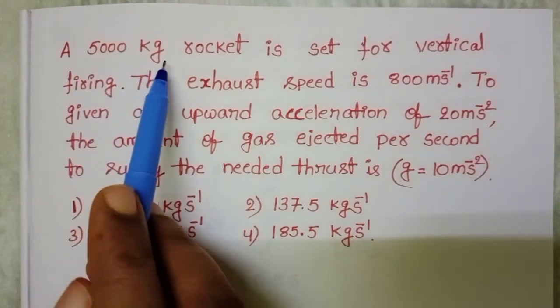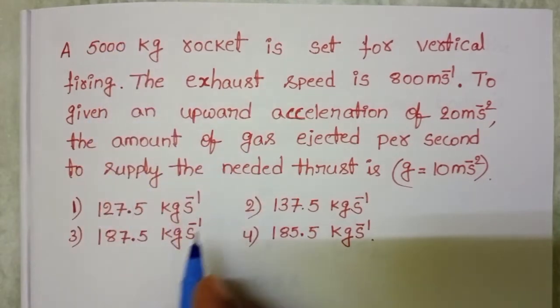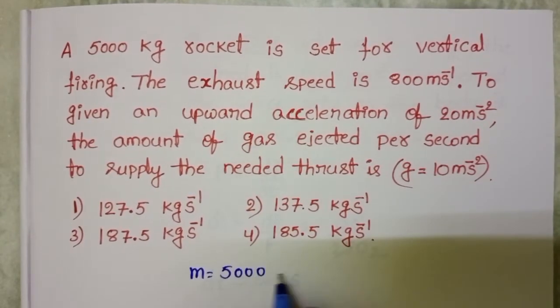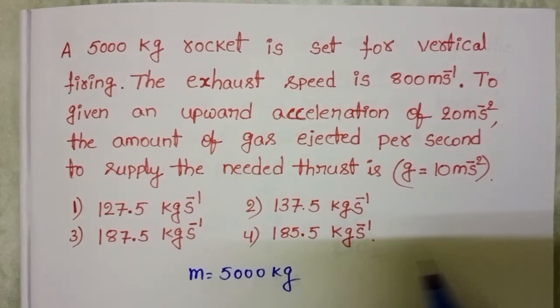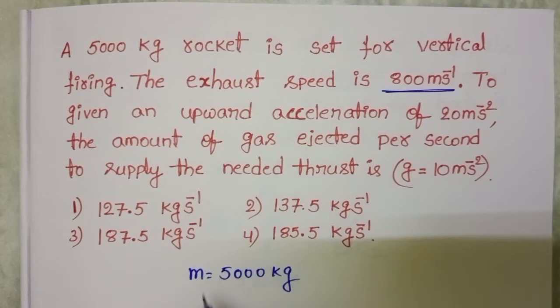A 5000 kg rocket is set for vertical firing. Given mass of the rocket is 5000 kg. The exhaust speed is 800 meter per second.